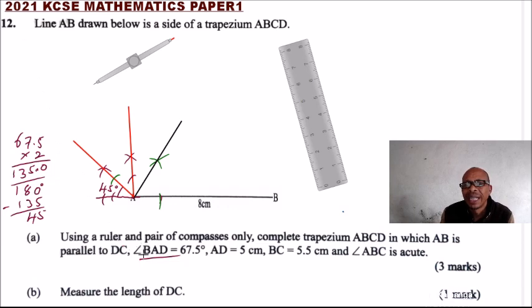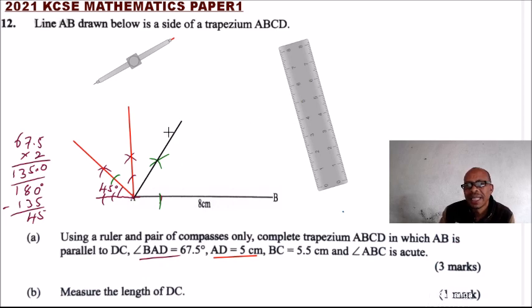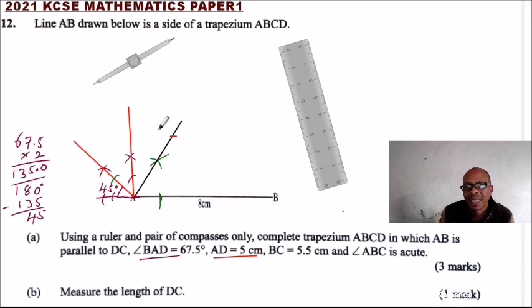We have been told that AD is 5 centimeters, so you use your compass and ruler to measure 5 centimeters. That is where you get point D — this is where our point D is located.